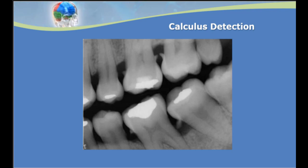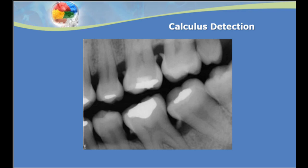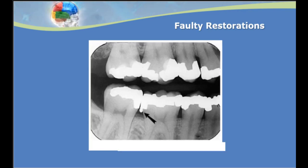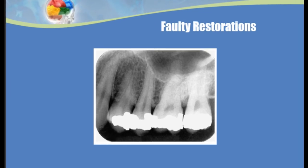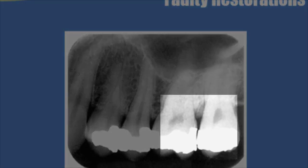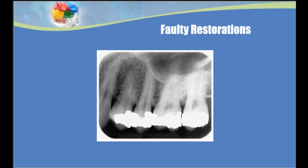Other things we look for when assessing periodontal issues are risk factors like calculus deposits. Subgingival calculus does not cause periodontitis, but it acts as an irritant and harbors the biofilm that causes disease — so large calculus deposits on x-rays are sometimes associated with active periodontitis. Faulty restorations also increase the risk of periodontitis by acting as an irritant and harboring bacteria. A very large overhanging margin can trap biofilm, and a faulty contour such as an open contact between numbers 14 and 15 increases the risk of food impaction, inflammation, and biofilm accumulation.